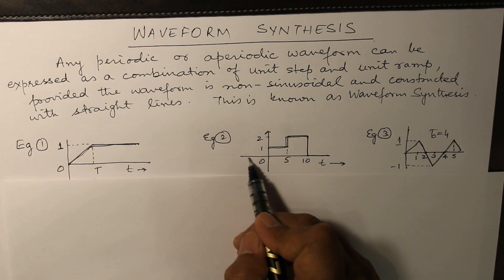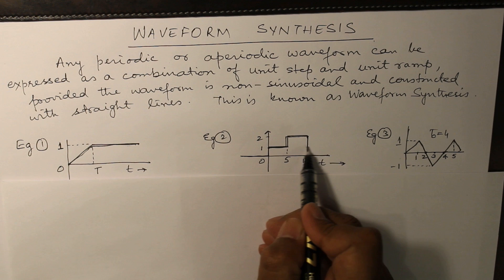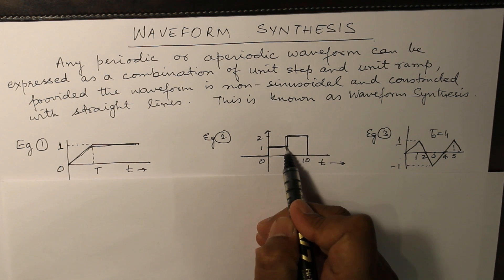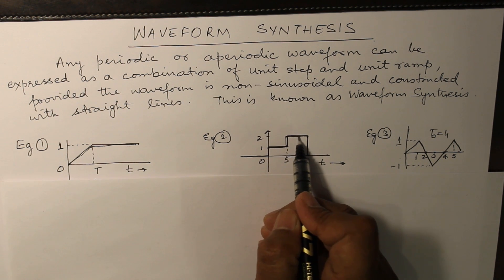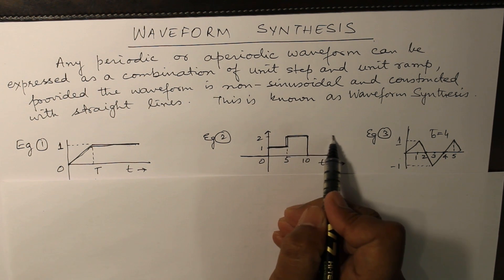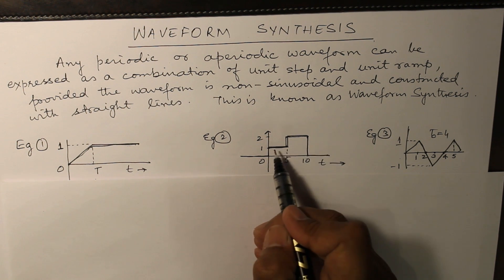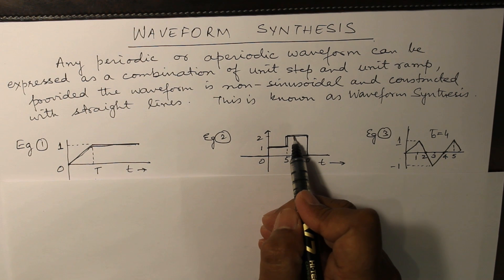In the second example, there is a unit step existing throughout. On to this unit step there is a displaced unit step of magnitude one, such that from one it jumps to two and continues for all time. This gives us u(t) plus u(t minus 5).